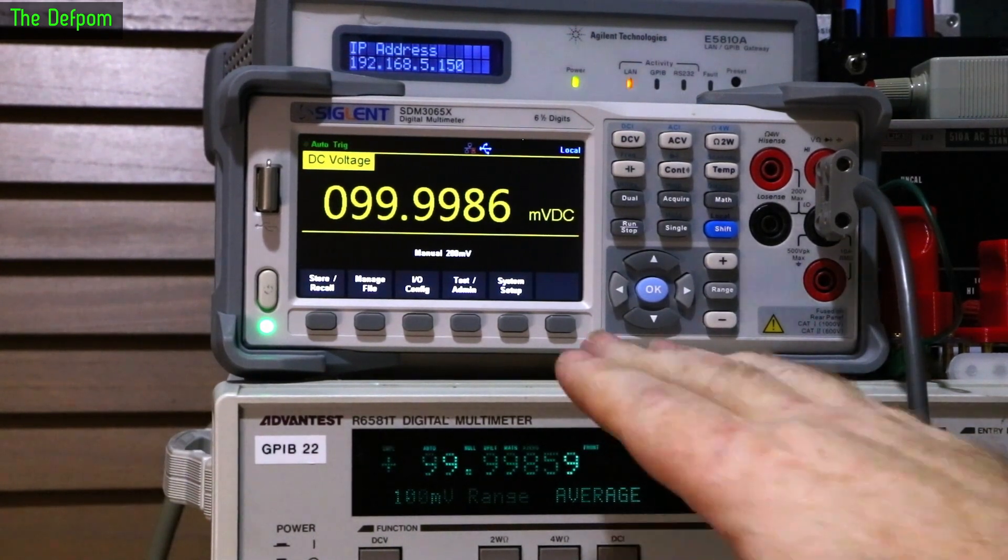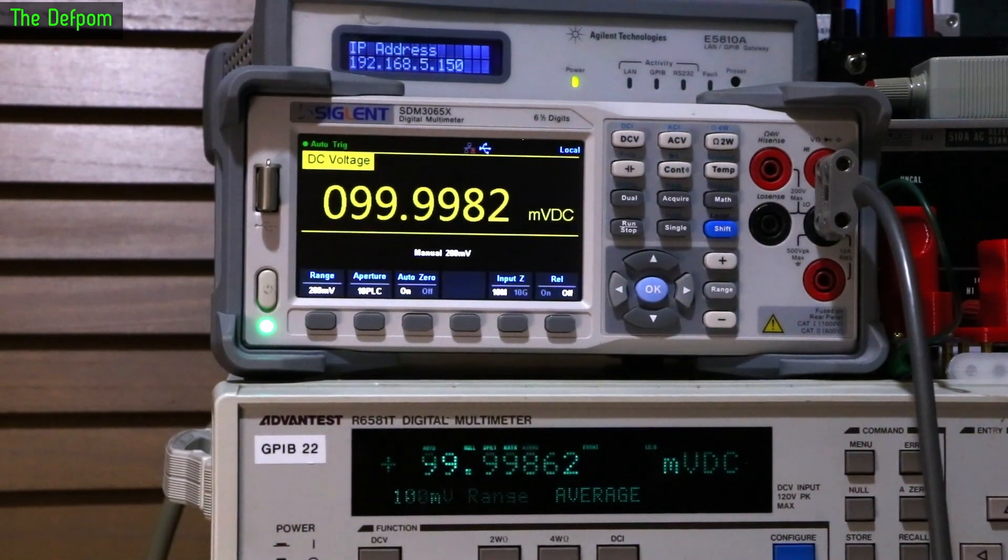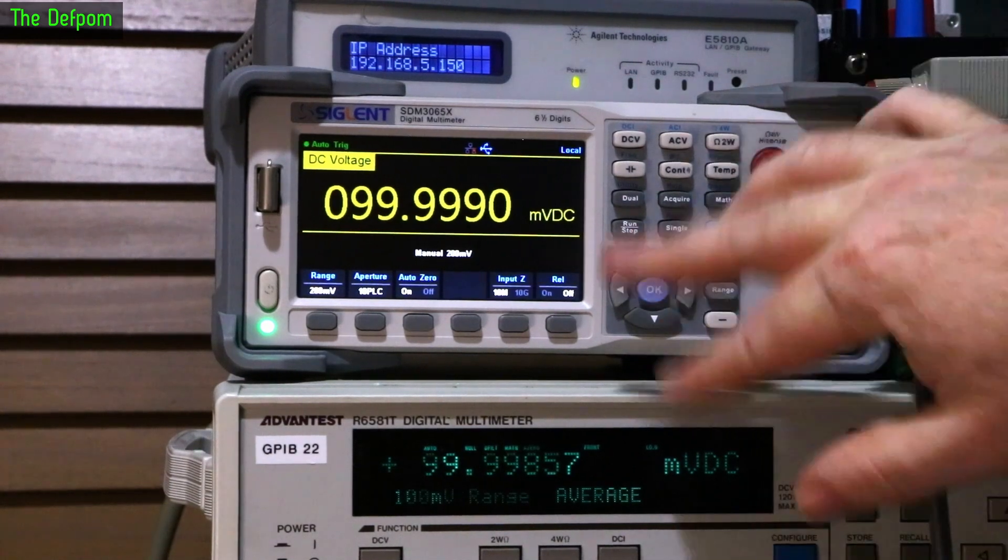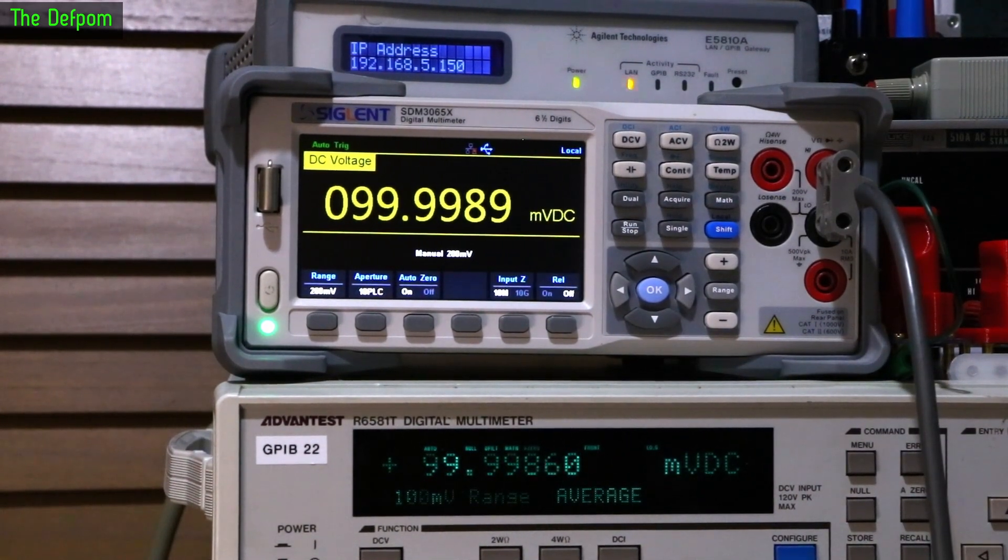I'm also going to do plus and minus, but also go to 2V and do auto zero on. We should be getting basically the same numbers. It basically is. Again noise is playing a bit of a part, but it's looking pretty close. So the calibration worked.